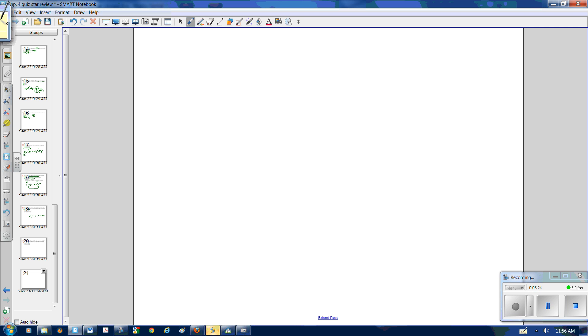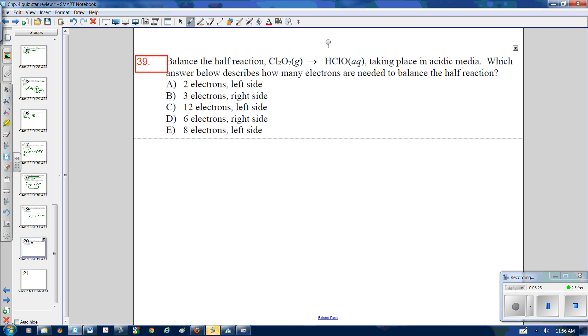So the last one is this one. Half reaction, again, acidic media. How many electrons are needed to balance? So it's Cl2O7 arrow HClO. So, first thing I have to do is put a 2 here. Remember other elements that will trip you up every time. So I balance Cl. Next thing is O. I have seven O's on this side. I have two here already. So I add five waters on this side.